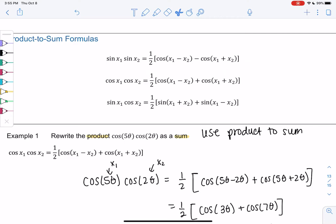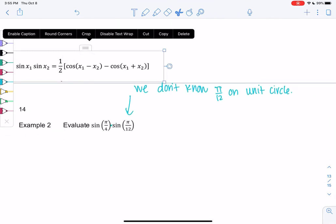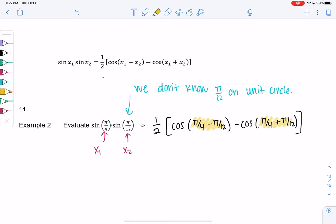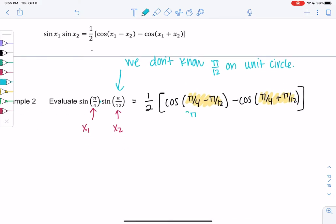So let's find the sine times sine formula. The sine times sine formula turns into a difference of cosines. Don't worry, we're not memorizing this, but we are using it. So x₁ will be π/4, and x₂ will be π/12. So we get one-half. Cosine of π/4 minus π/12 minus cosine of π/4 plus π/12. Which doesn't seem that useful yet, but maybe when we simplify these, they'll be better.